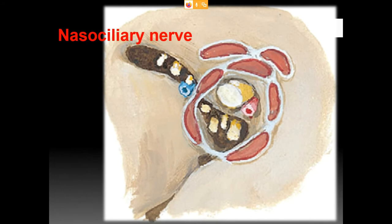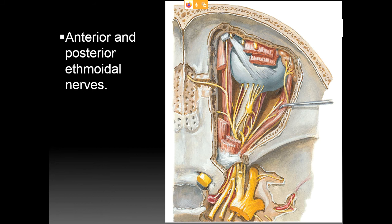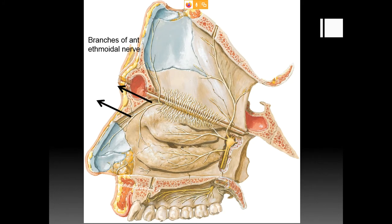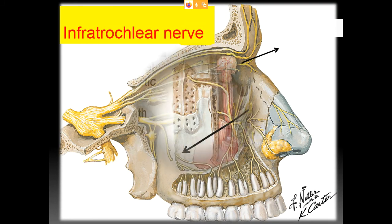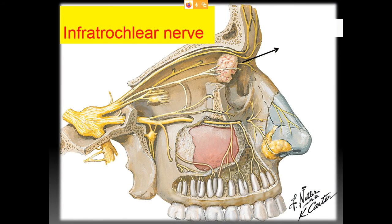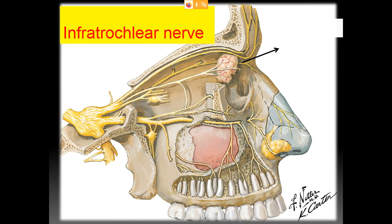The nasociliary nerve passes through the intermediate compartment of the superior orbital fissure and divides into anterior and posterior ethmoidal nerves, which pass through the anterior and posterior ethmoidal foramina and enter the ethmoidal air cells. The infratrochlear nerve is the smallest branch, running downward and communicating with the nasal branch of the maxillary division of the trigeminal nerve, supplying the external nasal area.